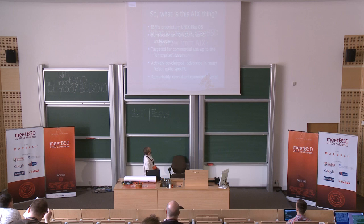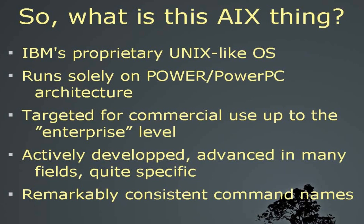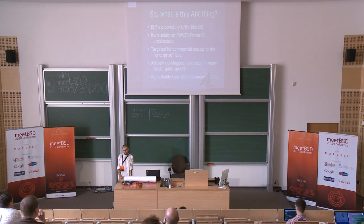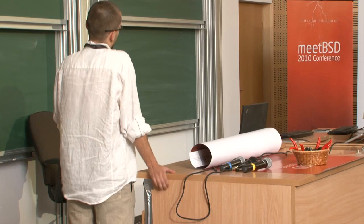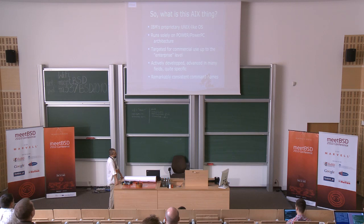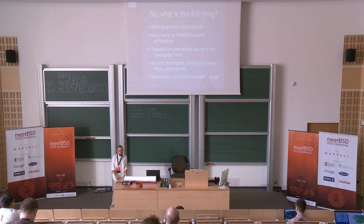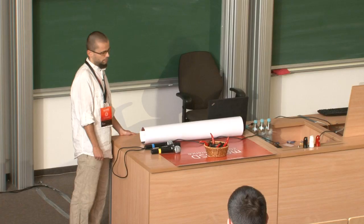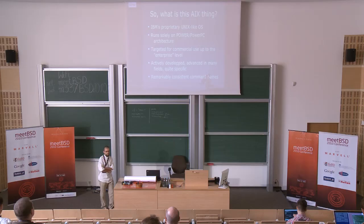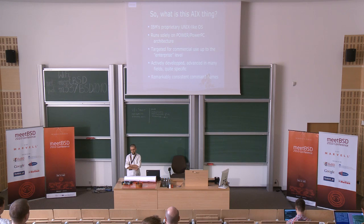So what is AIX? It's IBM's own proprietary operating system that runs on IBM's proprietary hardware on Power and PowerPC architectures. While there used to be ports for other architectures, current versions run on newer Power systems. This is a commercial business enterprise operating system with strong commercial objectives — unlike FreeBSD, it's not academic in any kind.